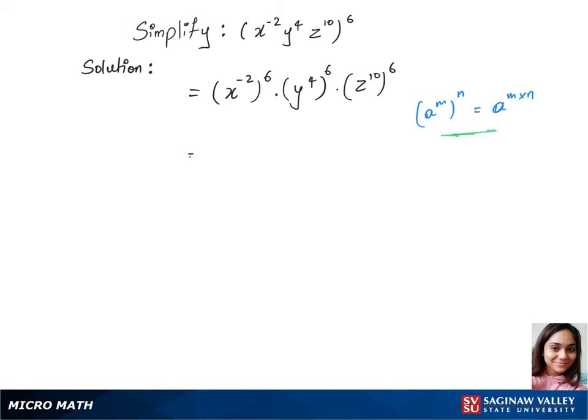Let's do this here: x^(-2 times 6) times y^(4 times 6) times z^(10 times 6). And this will give us x^-12 times y^24 times z^60. That's it.